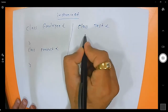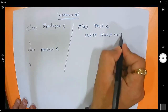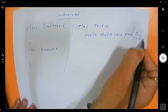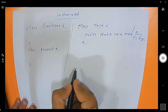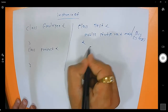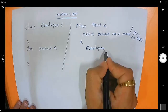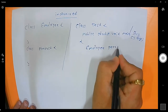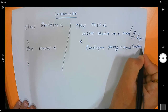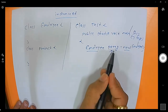In the Test class I have the main method: public static void main, and here you can write String array args. Now I am creating an object of Employee class, so I write: Employee parag = new Employee. So parag is an instance of Employee.